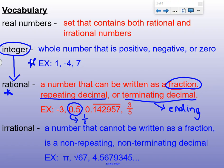The other type of decimal is a repeating decimal, which we have this example here. The bar on top of the numbers means that those are the numbers that repeat, so it goes on and on forever repeating. This is actually the fraction 1 seventh — if you did 1 divided by 7, you would get that decimal.